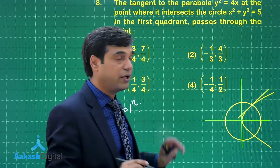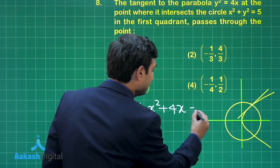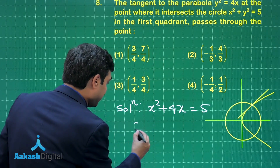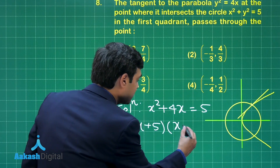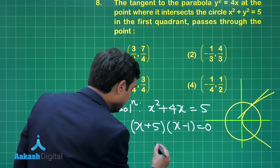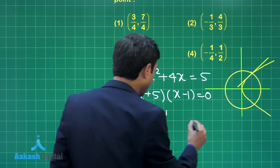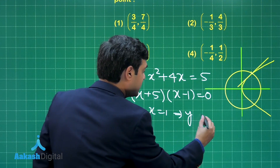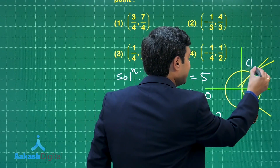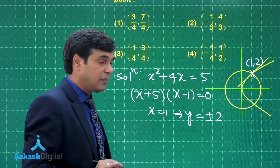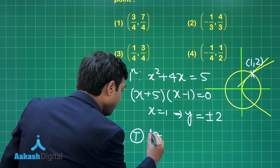Now let us solve the circle and parabola equations to get the point of intersection. We have x² + y² = 5; substituting y² = 4x gives x² + 4x = 5, so x² + 4x − 5 = 0, factorizing to get (x + 5)(x − 1) = 0. Clearly x = 1. Putting x = 1 in the parabola gives y = ±2. We are talking only about the first quadrant, so the point is (1, 2).